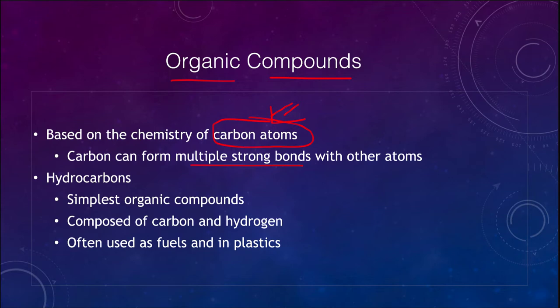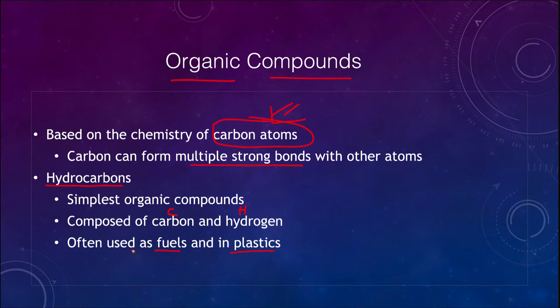As you recall, carbon has four electrons in its outer shell and therefore is very good at making lots of bonds and bonding with multiple other atoms. Hydrocarbons are the very simplest organic compounds that we look at, and they're composed of two elements: carbon and hydrogen. You may think there's only one way to put carbon and hydrogen together, but we'll see that there are many, many ways for these to be put together, and they have many uses in terms of fuels and plastics.